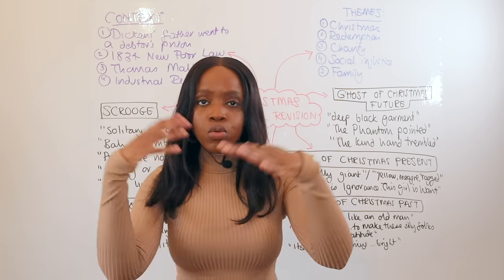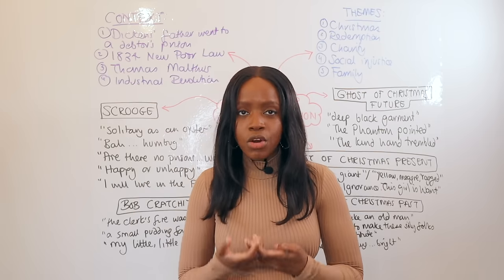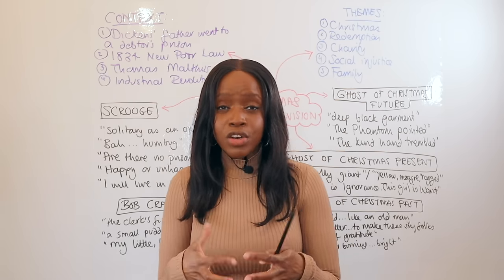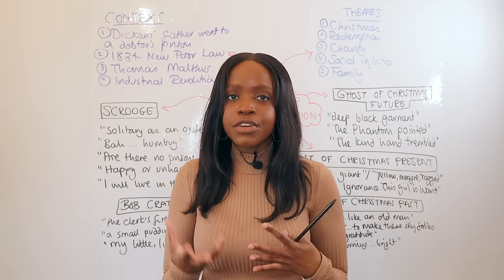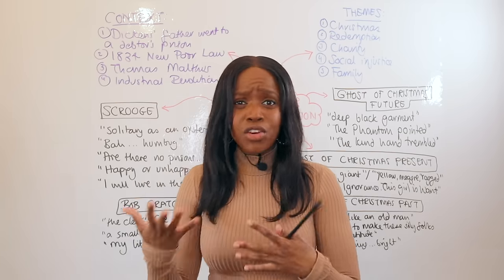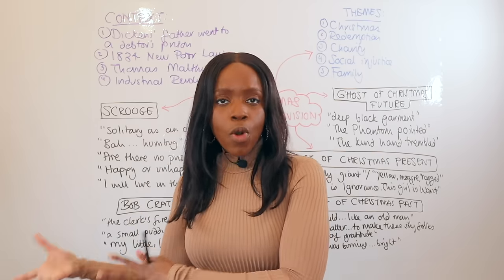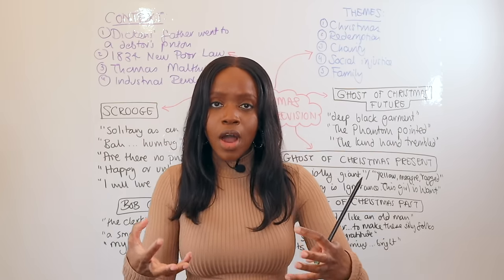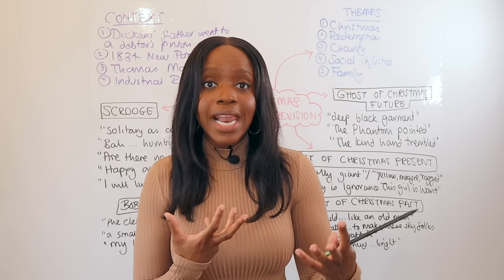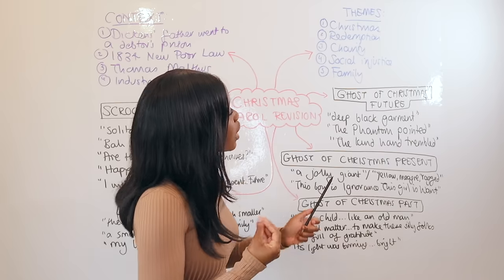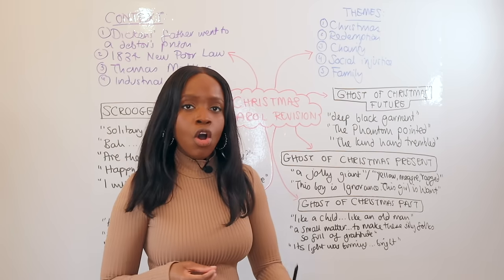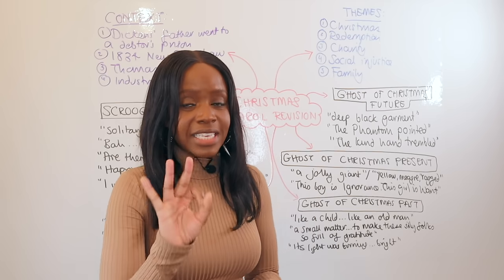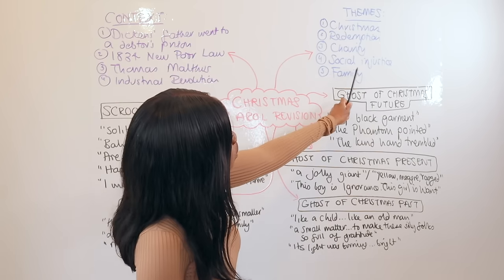The third theme is charity. The whole story is based on the importance of giving to the poor. Dickens wanted to encourage his rich readers — remember, in the Victorian era, the people who had leisure time to read were upper-class, not working-class people who were busy working. He was writing to remind them of the importance of giving charitably to the poor, being generous, and paying higher wages.